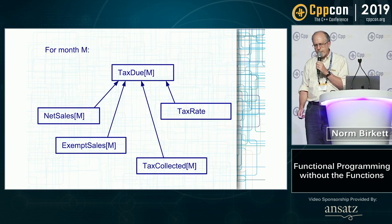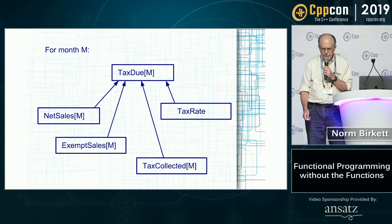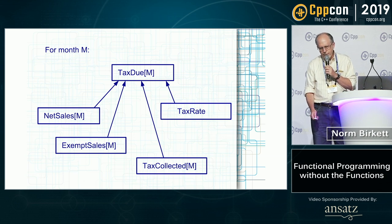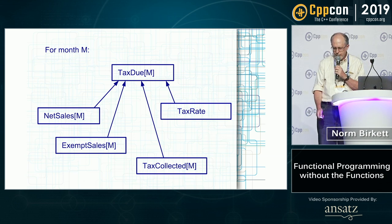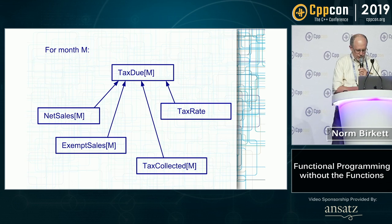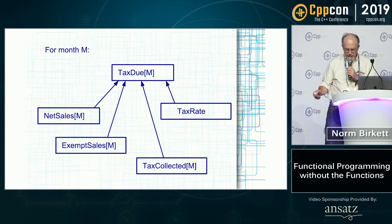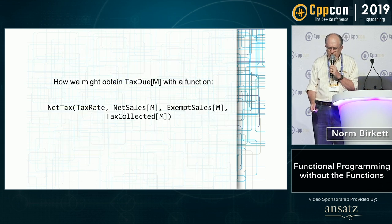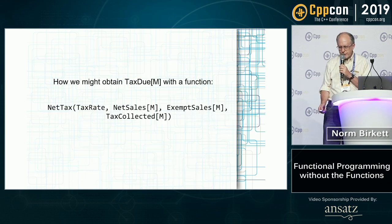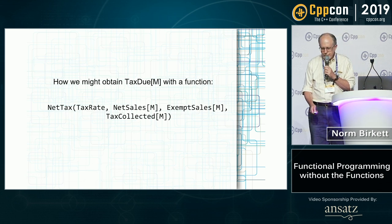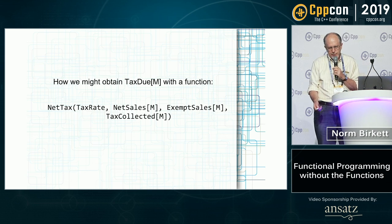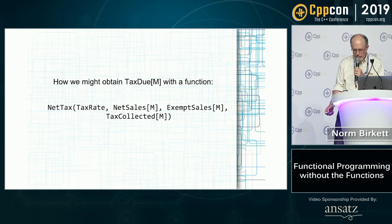So let's suppose that we're calculating for a variety of months the state sales tax that's due. I've drawn a little diagram here of the basic inputs to this calculation — anybody that's ever had to file for this knows this. And it's not a tricky computation, but there they are. Now if we're going to obtain tax due for month M with a function, it's going to look something like this — there are variations on this theme, but basically it's going to look something along these lines.